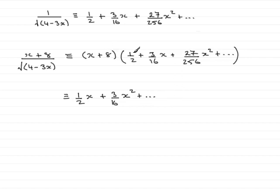Now, we'll pick up the 8 multiplied by each of the terms there, so we have 8 times a half, which is going to be 4. 8 times the 3 sixteenths x, which is going to be 3 over 2 x.